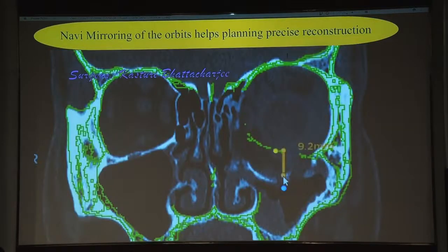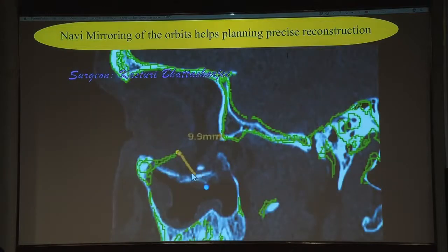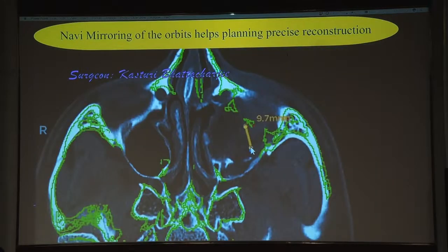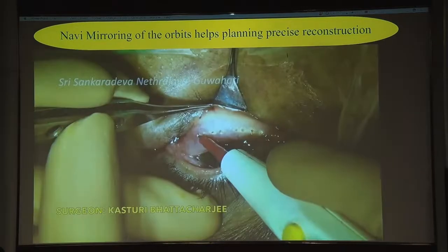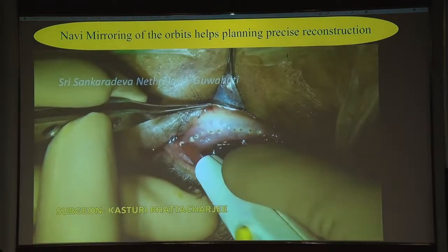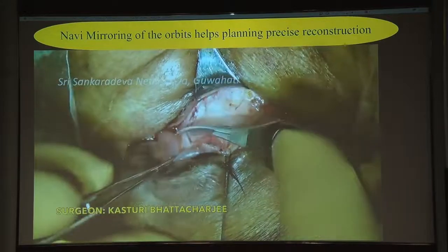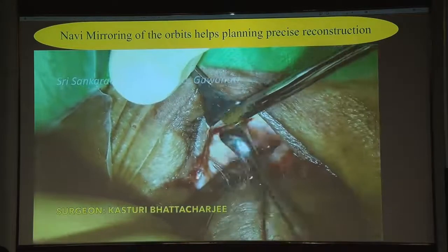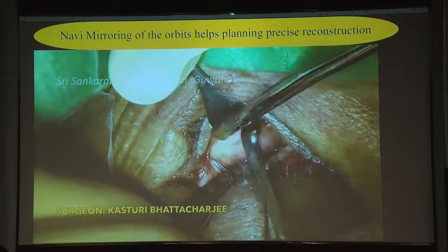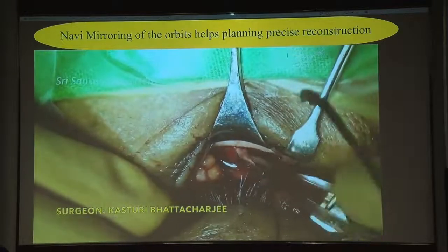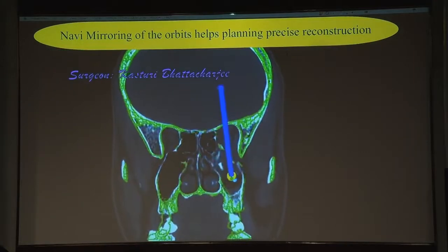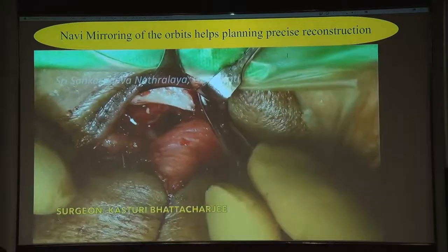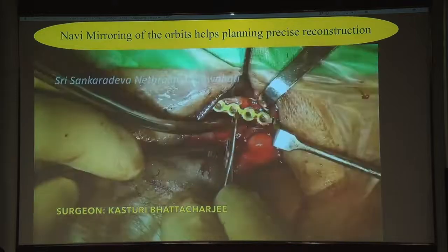Mirroring involves overlaying the normal side onto the abnormal side to measure the orbital expansion. This is how you can measure the degree of enophthalmos and orbital expansion. Once you measure the expansion, you determine the implant thickness needed. There is no validated nomogram for this yet, but I feel for every 6 mm of orbital expansion you need at least 1 mm thickness of implant.